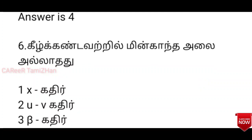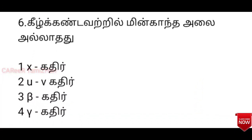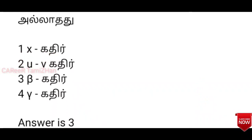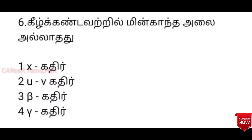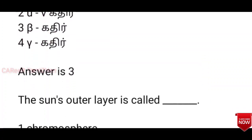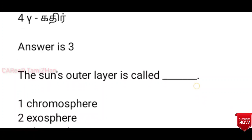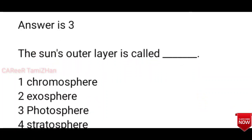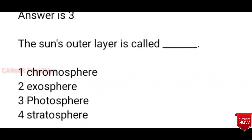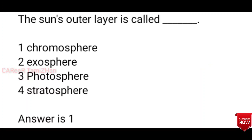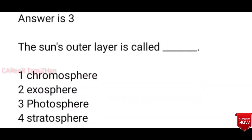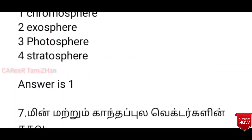Sixth question: The sun's outer layer is called — options are Chromosphere, Exosphere, Photosphere, or Stratosphere. The answer is Chromosphere. The sun's outer layer is called the Chromosphere. This is from the sixth book of basic physics and chemistry.